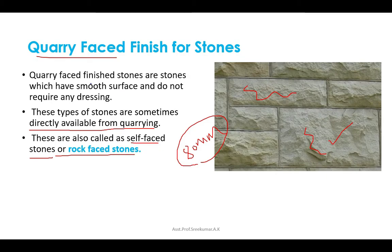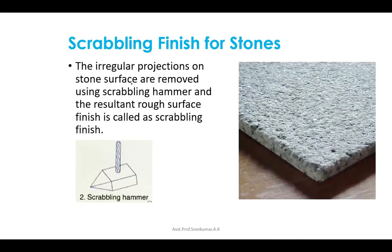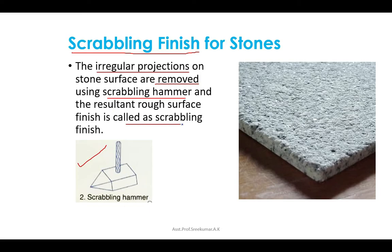The next type is the scrambling finish. This is a type of rough dressing in which the irregular projections are removed by a scrambling hammer. The resultant rough surface finish is called scrambling finish.